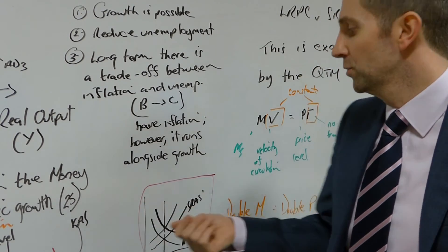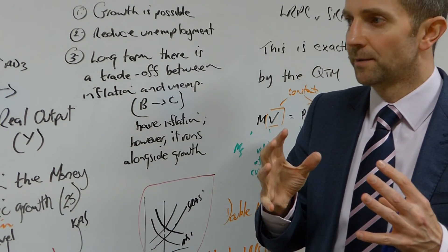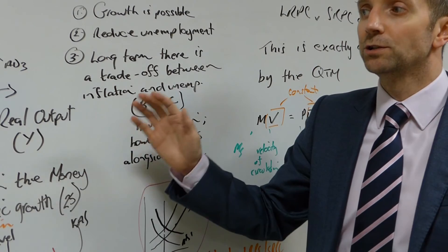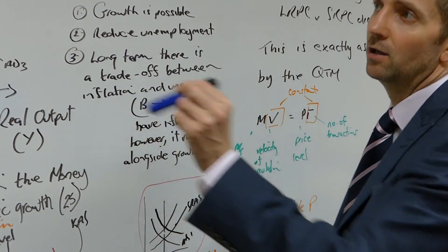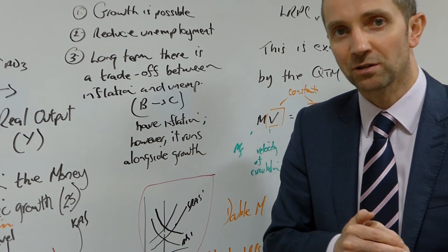He is saying that if you try to stimulate the economy in order to reduce unemployment, and you were to do this via the money supply, for example, all you're going to generate is higher and higher levels of inflation. So, this ties in very nicely with our expectations-adjusted theory of inflation and unemployment.